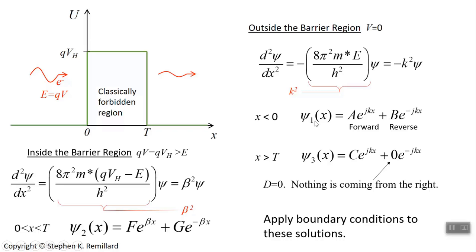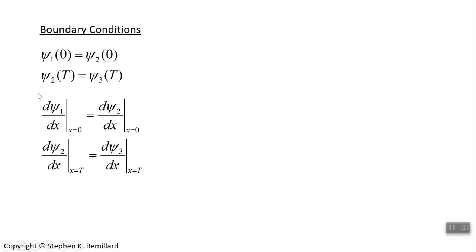Now we have three wave functions: psi 1, psi 2, and psi 3, in three different regions bounded by x equals zero and x equals t. We can apply boundary conditions to figure things out. The boundary conditions are: first, the wave function must be continuous — no discontinuous changes in its value as you cross a boundary; and second, the wave function must be differentiable across the boundary. Applying these at x equals zero and x equals t gives us our equations.